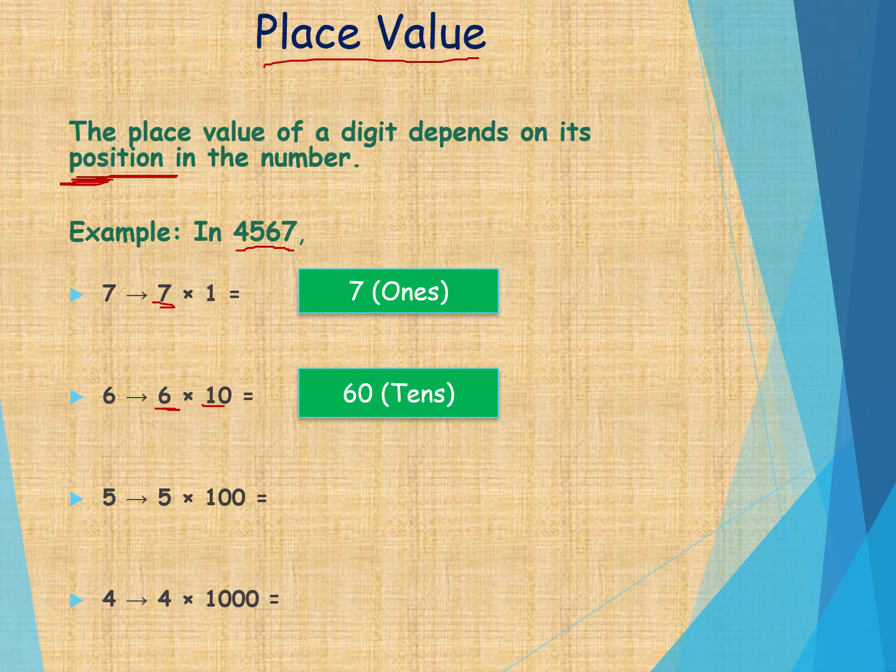Now what is the 5 number position? 5 into 100. Where it placed? 100's place. What it become? 500.